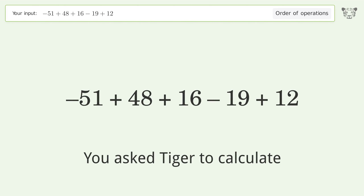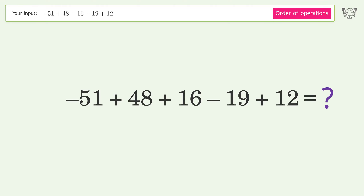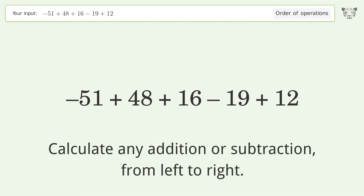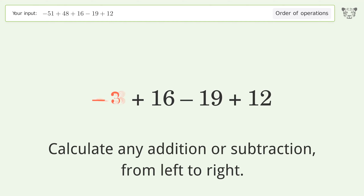You asked Tiger to calculate this. It deals with the order of operations — the final result is 6. Let's solve it step by step. Calculate any addition or subtraction from left to right: negative 51 plus 48 equals negative 3.